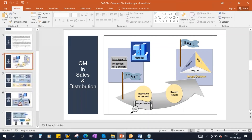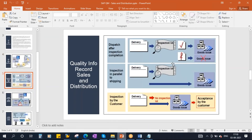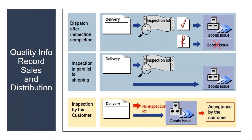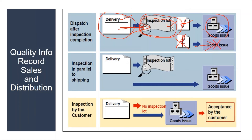Now here we have one more option - at what stage you want to do the quality inspection. We have three scenarios. SD people will create an outbound delivery, and once they create it the system will automatically generate a lot. Now whether you want to deliver the product before or after the quality inspection is the question. The lot gets generated, they do quality inspection - if approved they do goods issue, if rejected quality is not good then they will not do goods issue. This is dispatch after inspection completion.